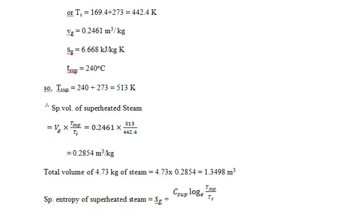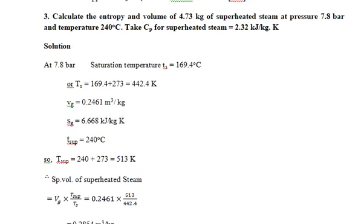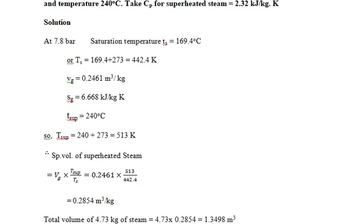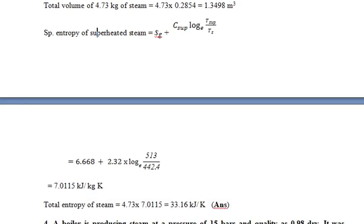Now find the specific entropy of superheated steam. Apply the formula: s_sup = sg + Cp·ln(T_sup / T_sat). Substituting values from the steam table at 7.8 bar, you get specific entropy = 7.0115 kJ per kg·K. For 4.73 kg of steam, multiply: 4.73 × 7.0115 = 33.16 kJ/K. This is the total entropy of 4.73 kg of superheated steam.